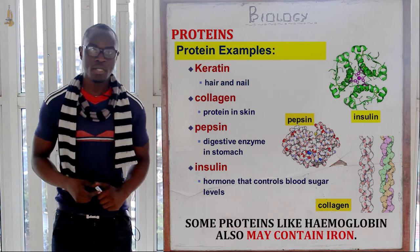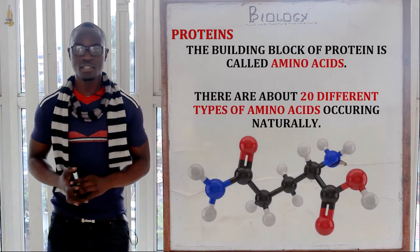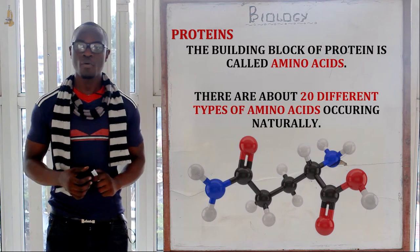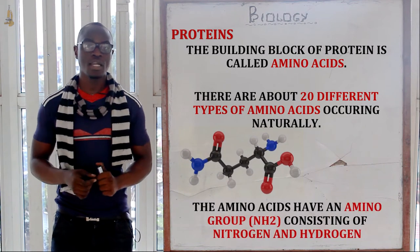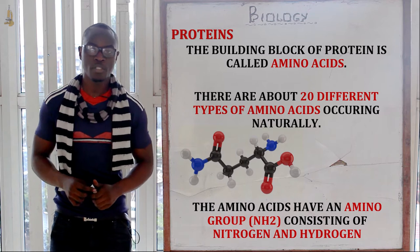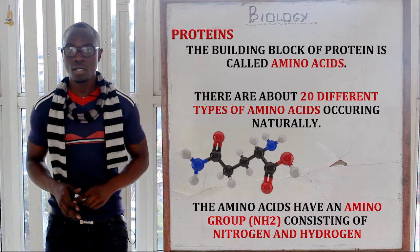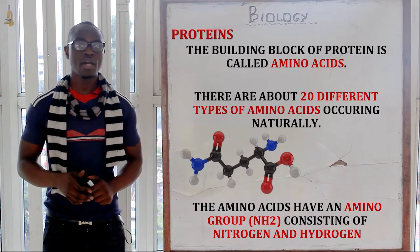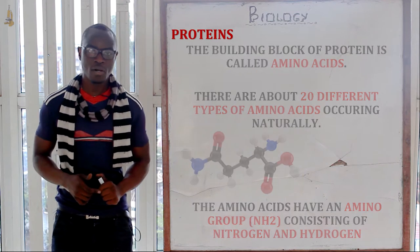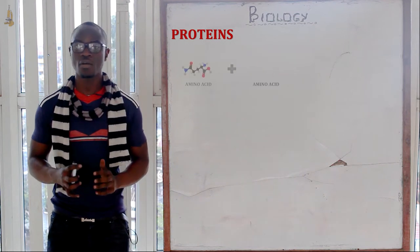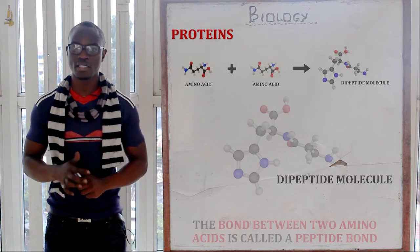Hemoglobin is also a protein compound. Protein is made up of amino acids, whereby we have 20 different types of amino acids. All amino acids contain an amino group which is NH2, a radical whereby we have nitrogen and hydrogen. Two amino acids may combine giving a dipeptide molecule, like for the carbohydrates.